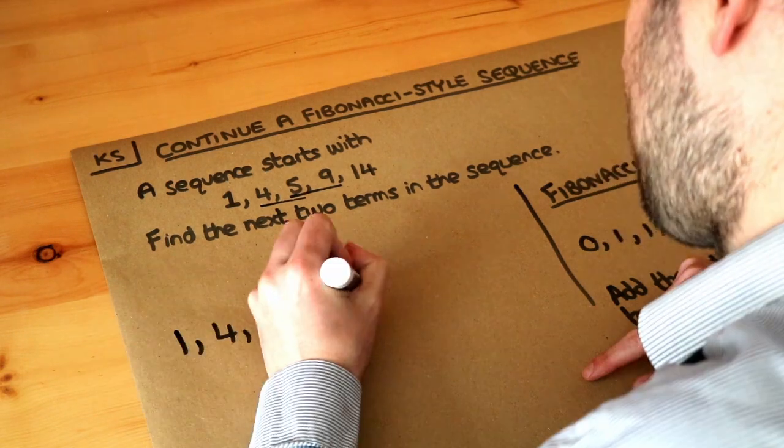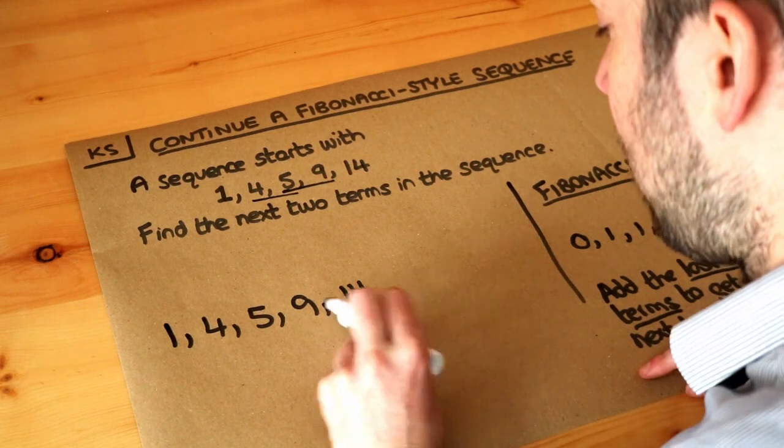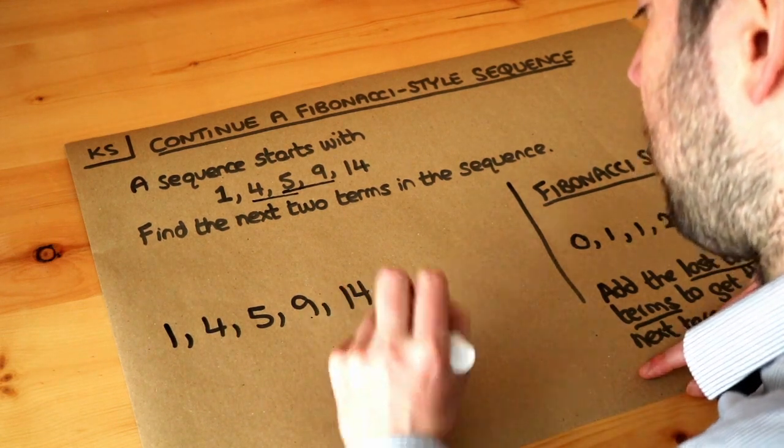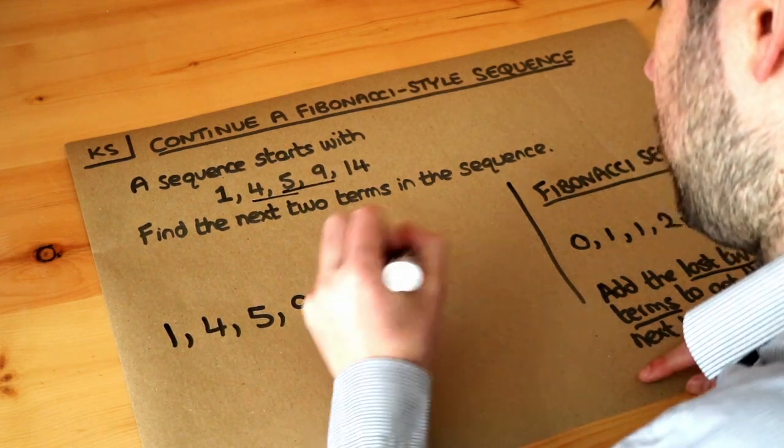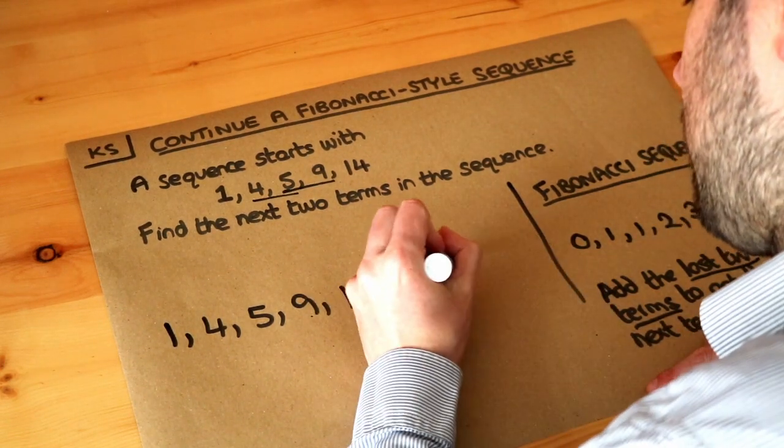So let's just copy these out first. If we apply the same rule as we did for the Fibonacci sequence, we add the last two terms. So 9 plus 14 is equal to 23. Then add the last two terms. 14 plus 23 is 37.